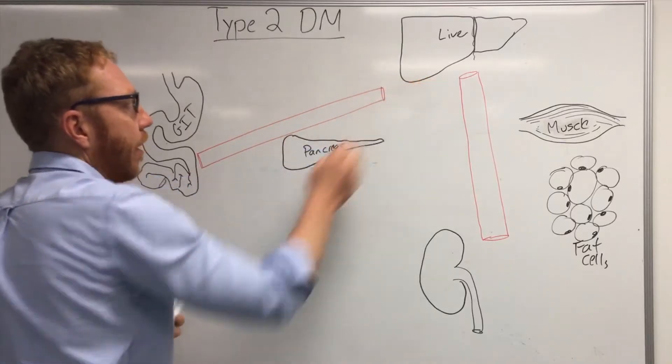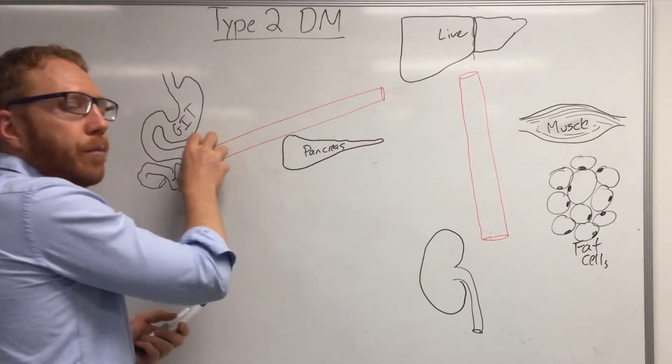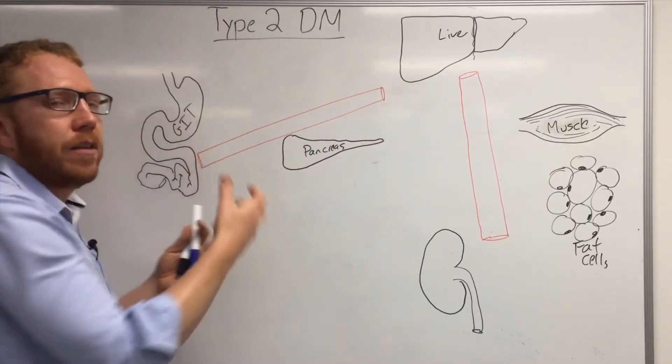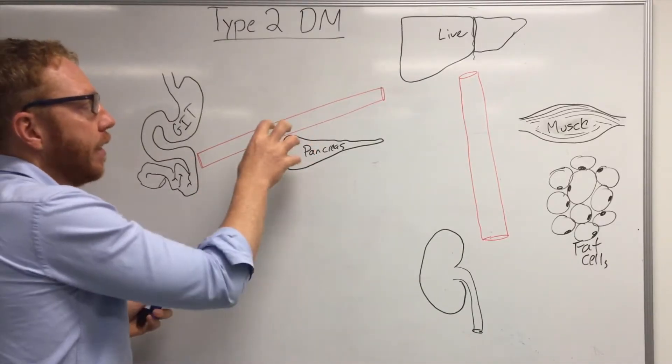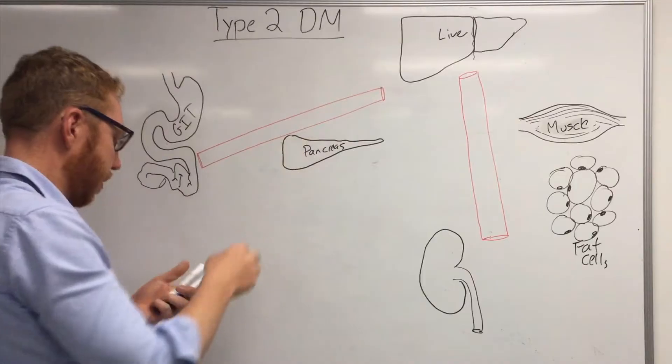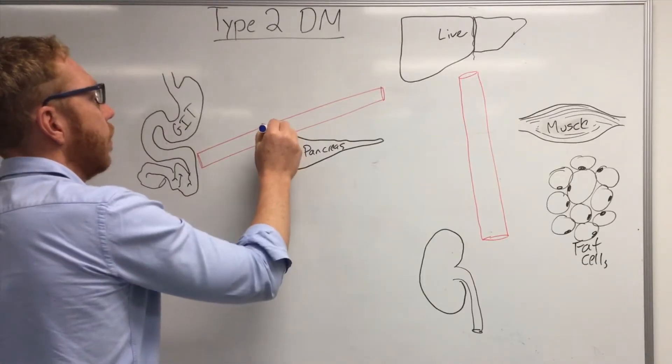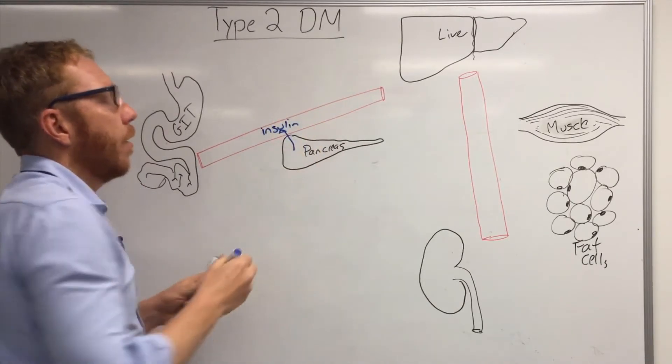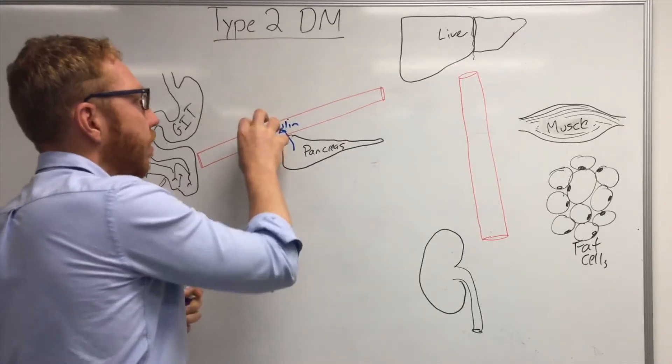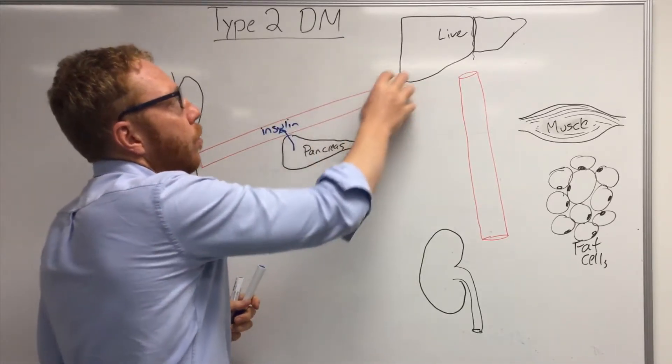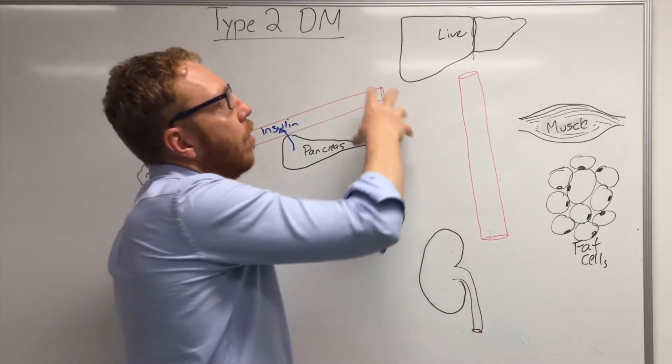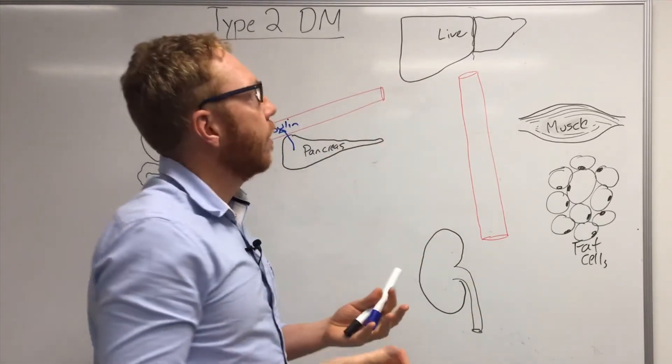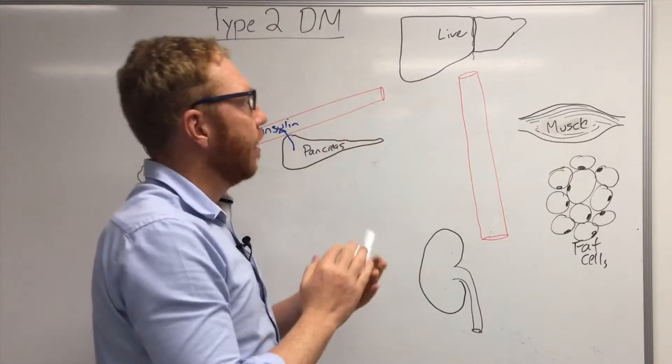On the way to the liver however, this breakdown product of carbohydrates, in this case glucose, will be picked up by the pancreas and particularly the beta cells will release something known as insulin. Now with the combination of insulin and glucose, it will be taken to the liver through the portal system and the liver will start to store that glucose to try and bring down the level of glucose.